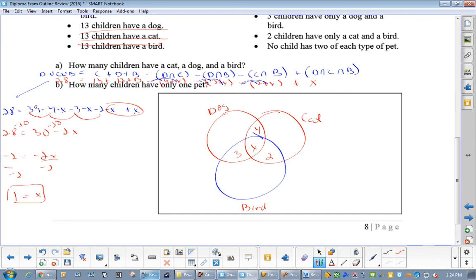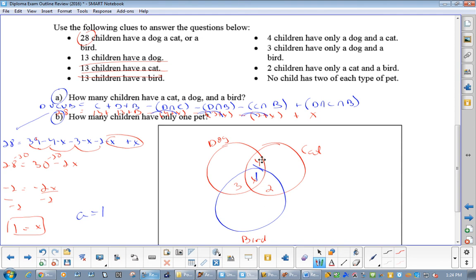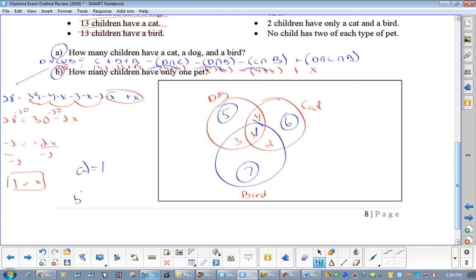Now, it says how many... We're doing A. So, that's 1 now. But here's the harder one. How many have only 1 pet? Well, we have to go back, and it says 13 have a dog. So, all this must add up to 13. So, 13 minus 4 minus 3 minus 1 is 5 here. 13 have a cat. So, then we subtract 4, 1 and 2, and you'll get 6. 13 have a bird. So, we minus the 3 minus the 1, that's 7. So, A is 1. B, we have to go 7 plus 5 plus 6 equals 18 only have one pet.